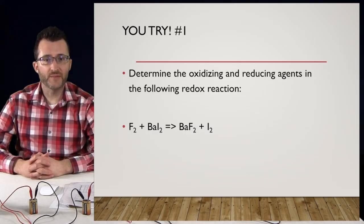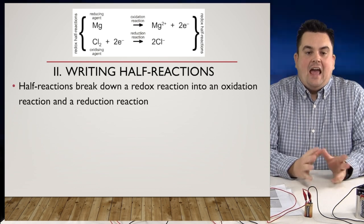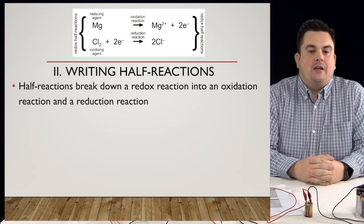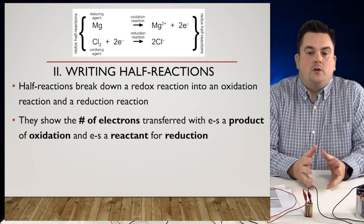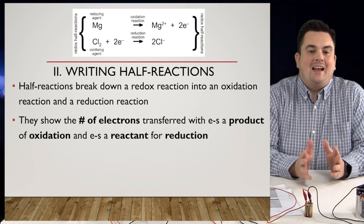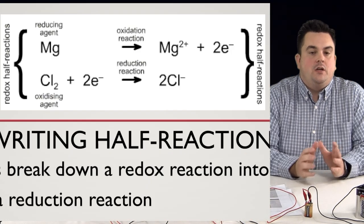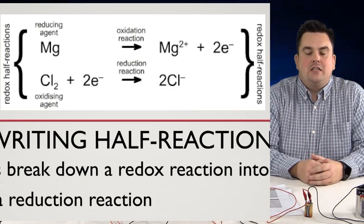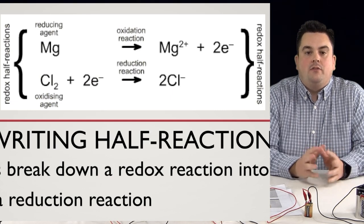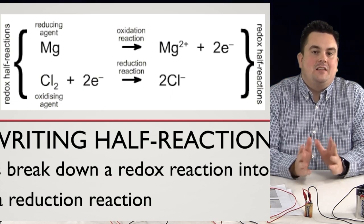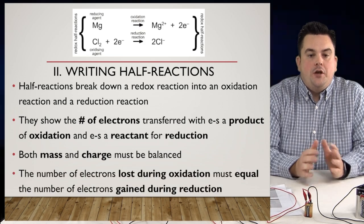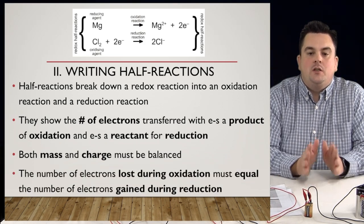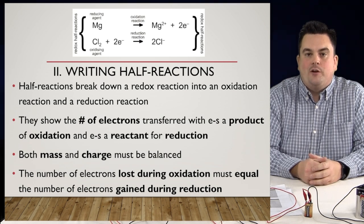You try number one: determine the oxidizing and reducing agents in the following redox reaction. Half-reactions break down a redox reaction into an oxidation reaction and a reduction reaction. They show the number of electrons transferred, with electrons as a product of oxidation and electrons as a reactant for reduction. Both mass and charge must be balanced, and the number of electrons lost during oxidation must equal the number of electrons gained during reduction.